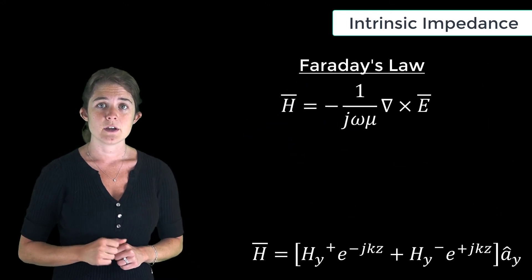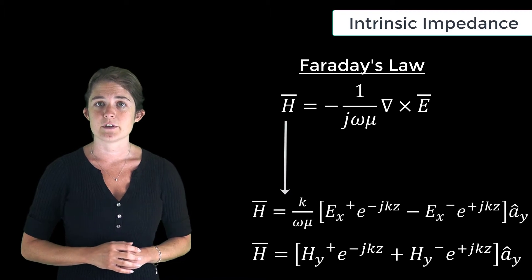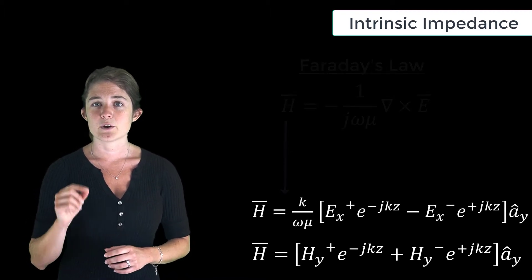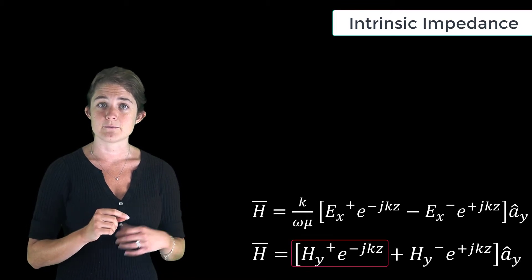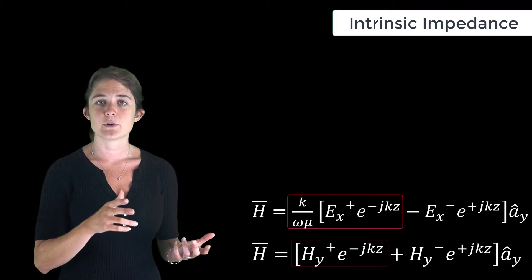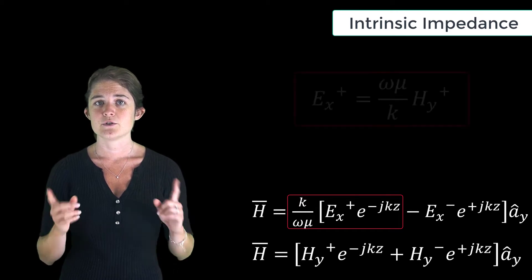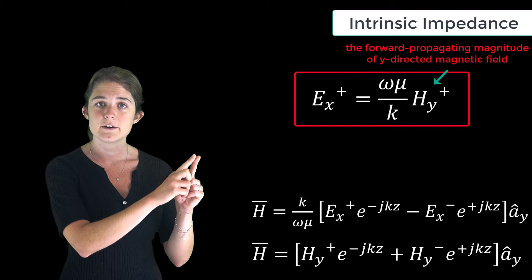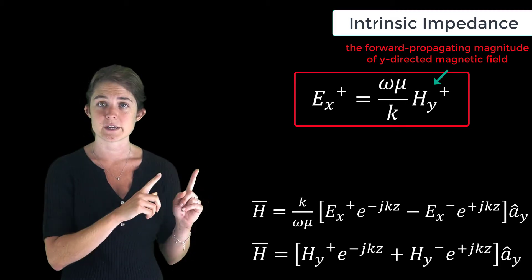We can then equate the forward propagating terms in the first expression for H to the forward propagating terms in the second expression for H to obtain this relationship between the forward propagating magnitude of y-directed magnetic field, represented by H_Y^+, and the forward propagating magnitude of the x-directed electric field, represented by E_X^+.